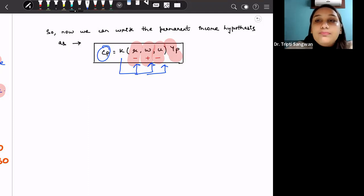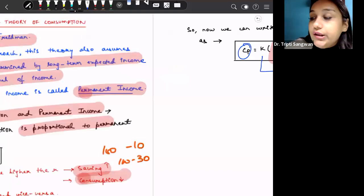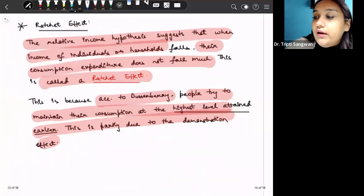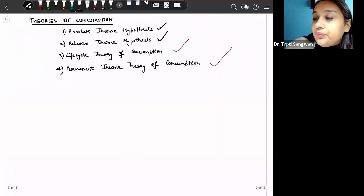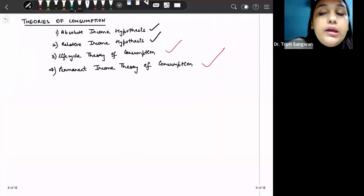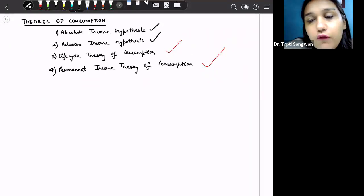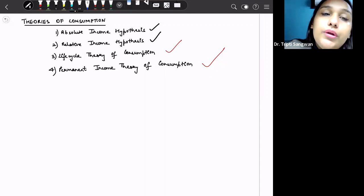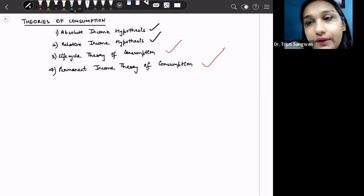So finally, this permanent income hypothesis says that consumption in the current time period is a proportion of these factors. So with this, we are done with our consumption theories. There are four theories that we have done: first is absolute income hypothesis, relative income hypothesis, life cycle theory of consumption, and permanent income theory of consumption. If there is any doubt in these theories of consumption, you can ask me. All the best for your preparation. Take care and we will do the next topic in the next lesson. Bye, everyone.